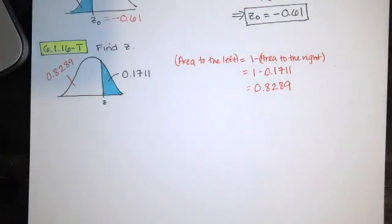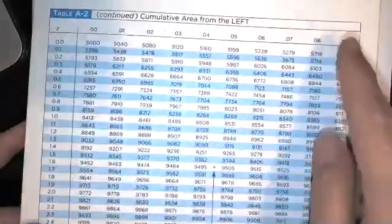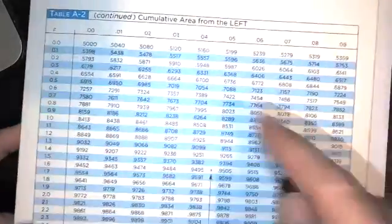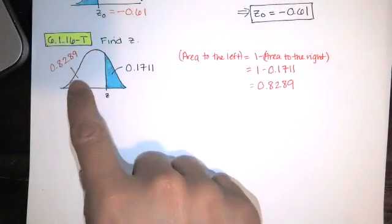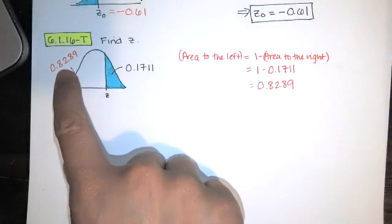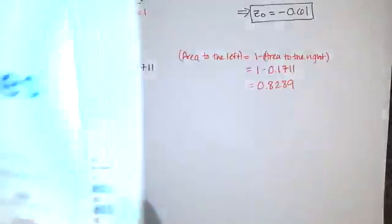Now, this time, we're given the area, and we want the z-score. So you don't want to look around the outside of this table. That's what we almost always do if we're given a z-score and we want the area. This time, we're given an area, and we want the z. So we know that that area over there must be 0.8289. So I'm looking for 8289.